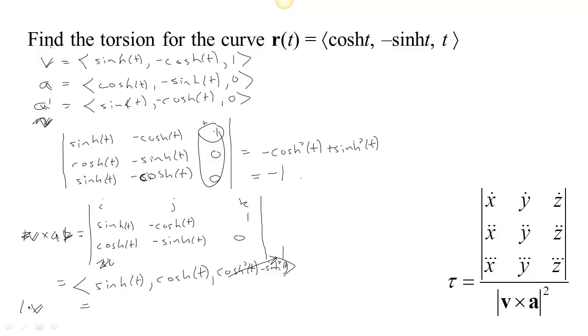We want the length of V cross A. So we need to find the length of that vector, which would be the square root of sinh²t + cosh²t + 1². And let's see, is there anything we could do to simplify that?